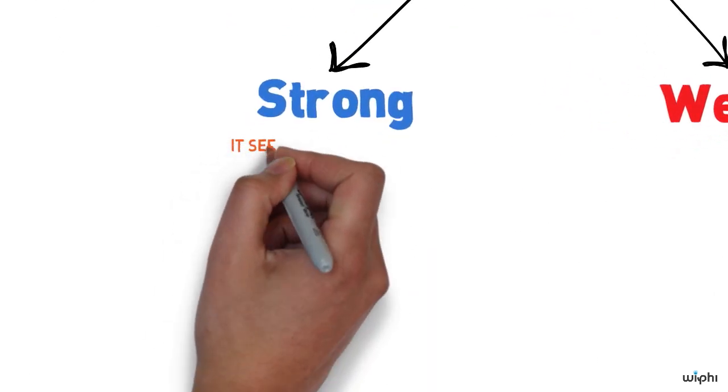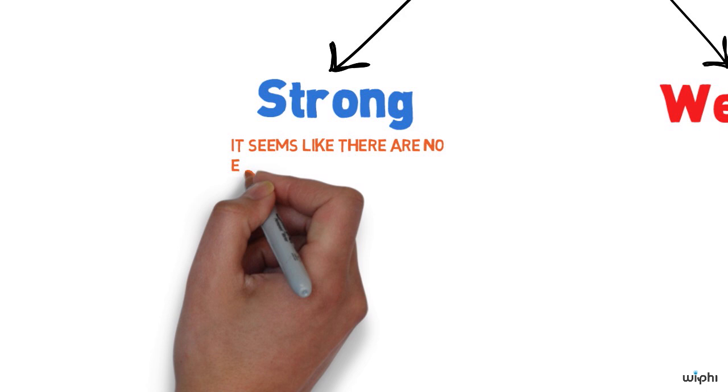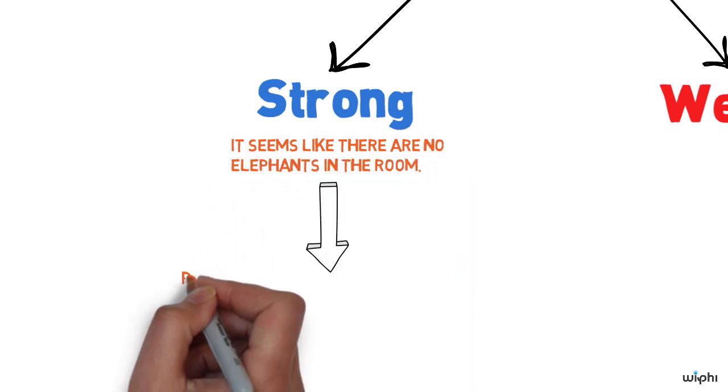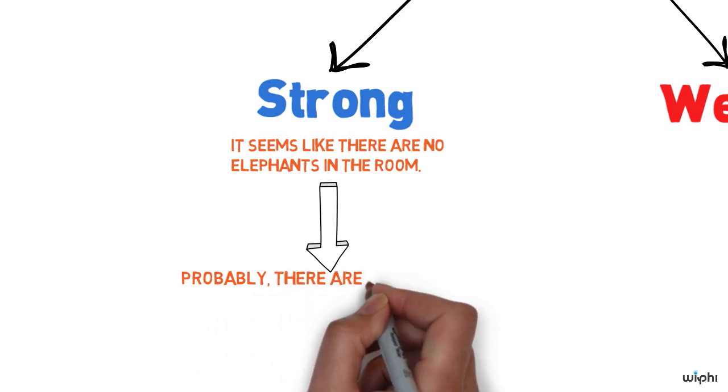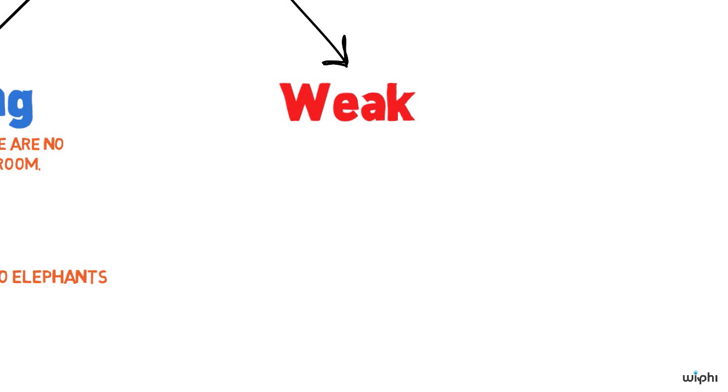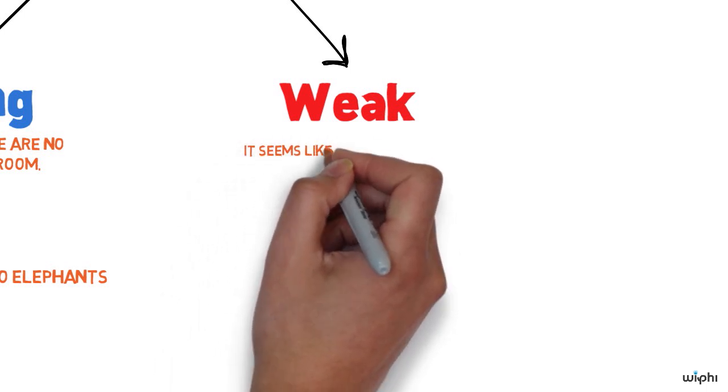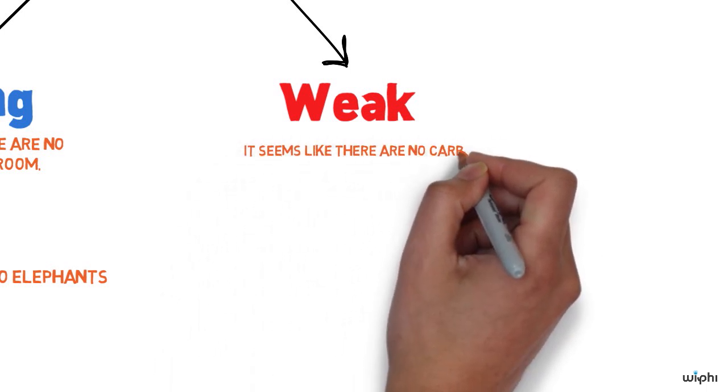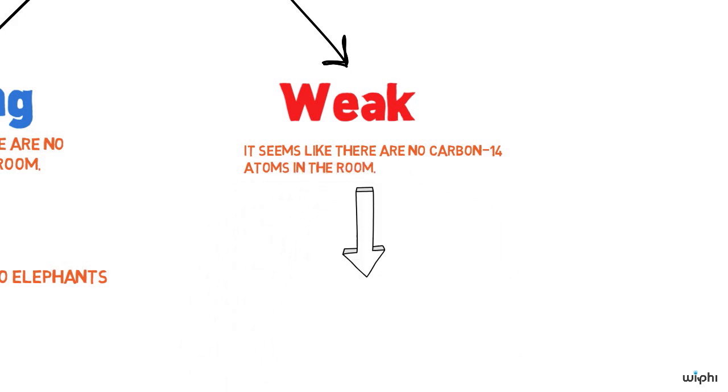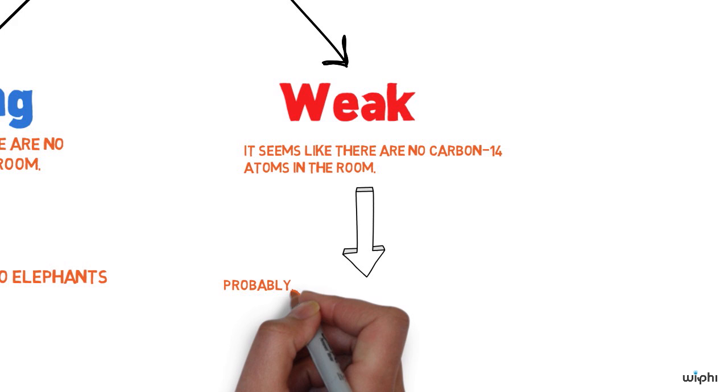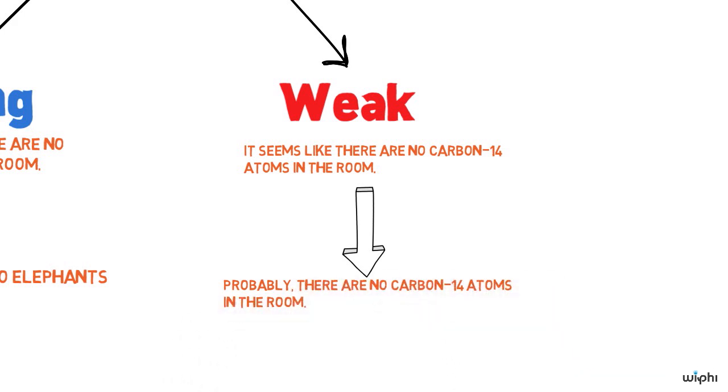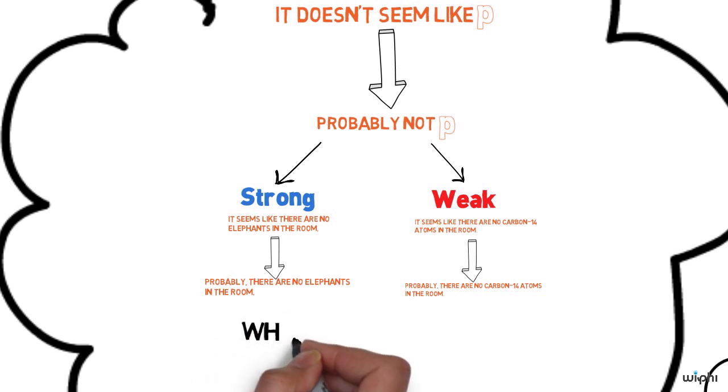So here are some examples. Look around the room. It seems like there are no live elephants in the room. Therefore, probably there are no live elephants in the room. That seems to be a pretty strong inference. What about this one? Look around the room again. It seems like there are no carbon 14 atoms in the room. Therefore, probably there are no carbon 14 atoms in the room. Well, that doesn't seem like a very strong inference. Even if you look around the room twice, what is the difference?